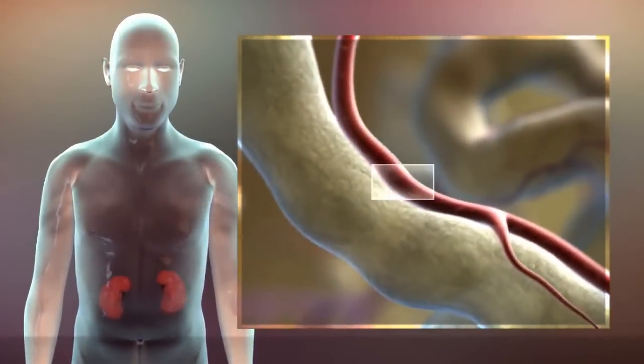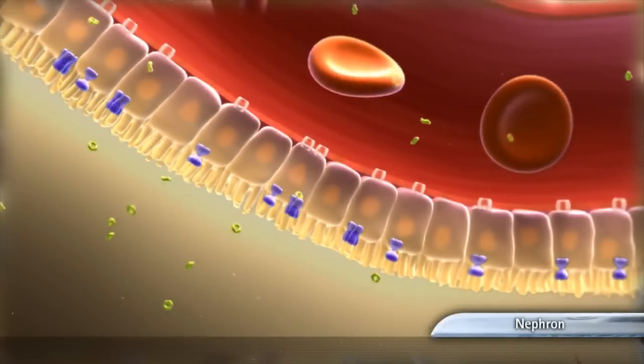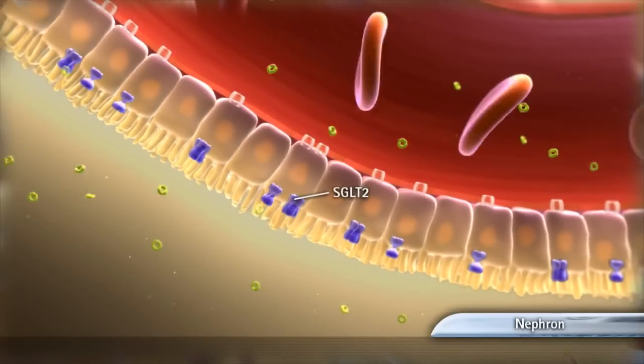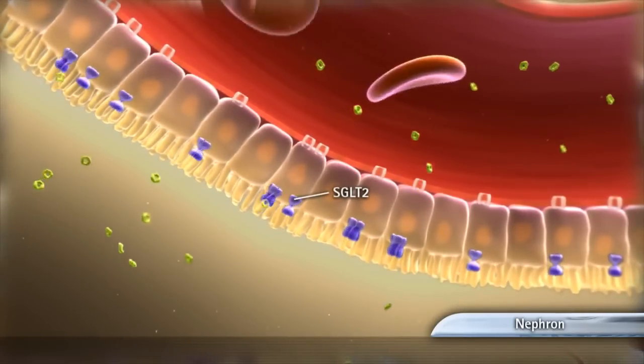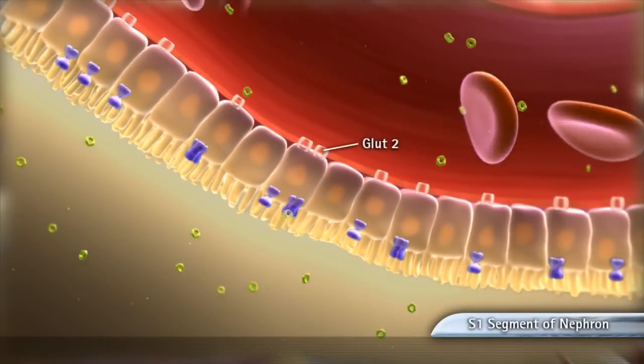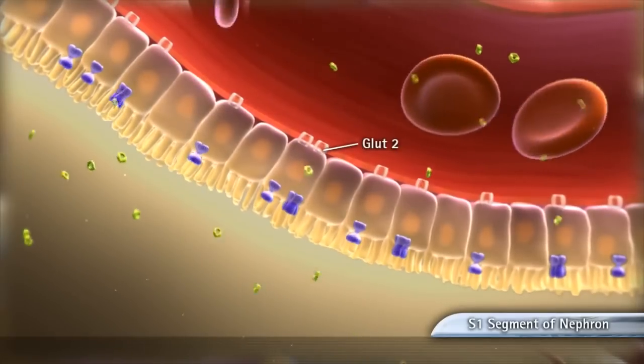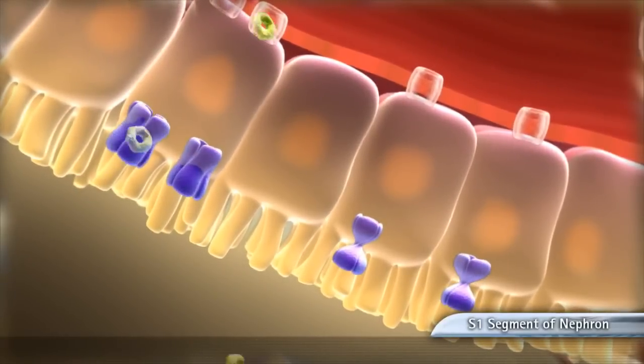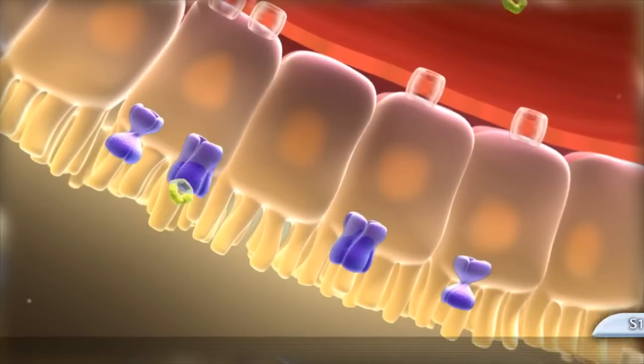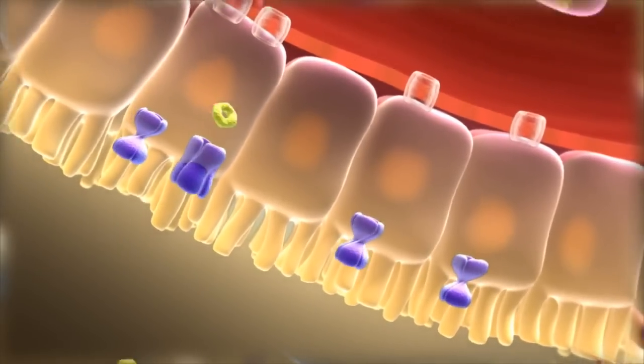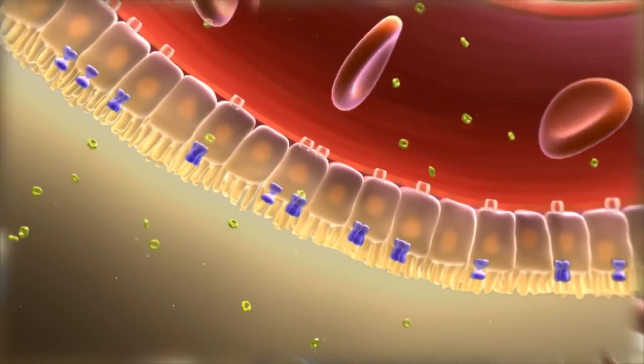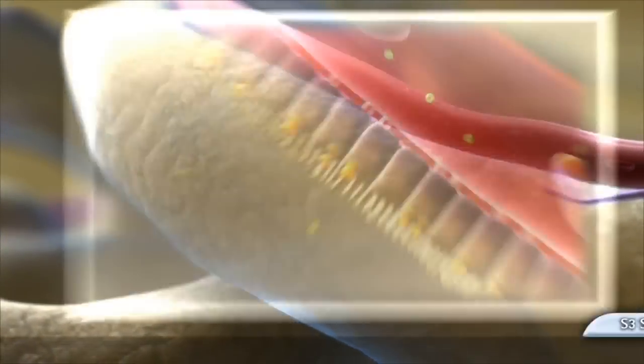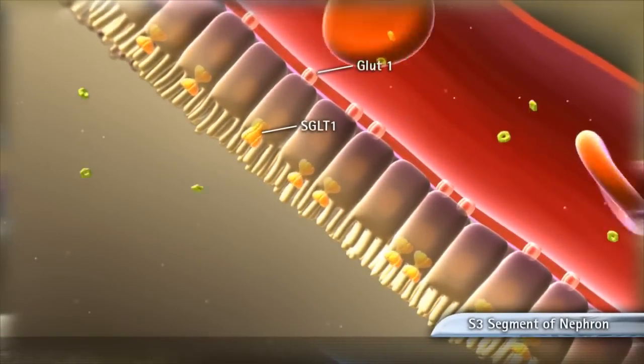Renal glucose reabsorption, mediated by the sodium glucose transporter 2, or SGLT2, is the primary mechanism by which filtered glucose is actively returned to the blood and retained in the body. SGLT2 actively reabsorbs about 90% of all filtered glucose in the S1 segment of the proximal tubule. SGLT2 is believed to be expressed almost exclusively in the kidneys. SGLT1 reabsorbs the remaining filtered glucose.